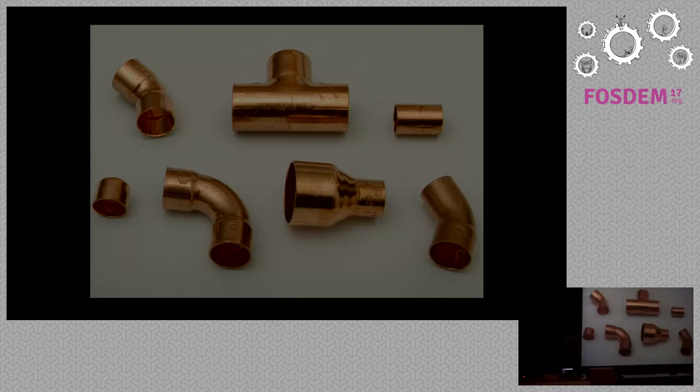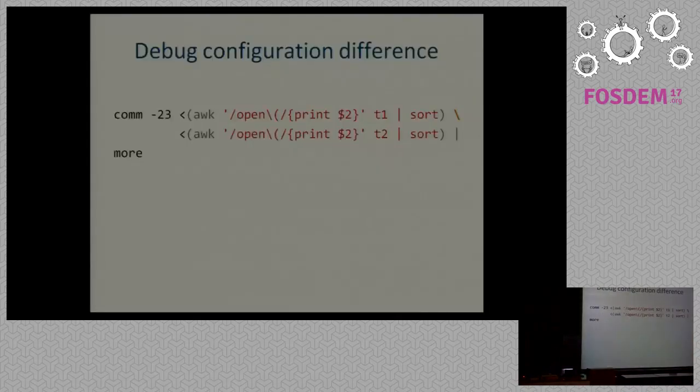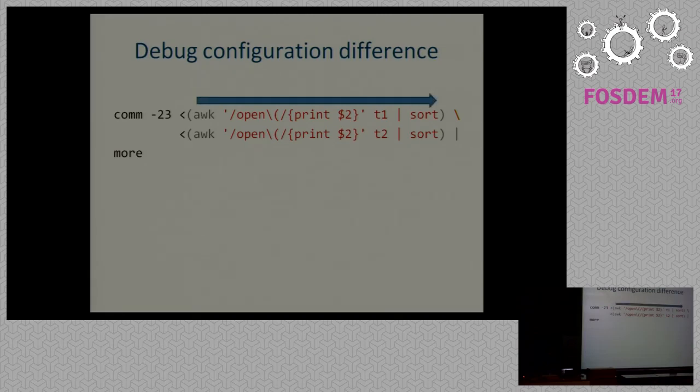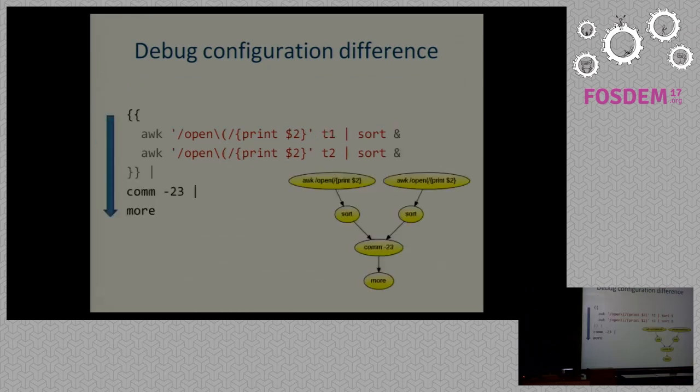Let me give you some further examples. First of all, a motivating example from a debugging perspective. Say you want to find the differences between two strace outputs. And what you would do is run awk and sort the result. The problem with this is that the flow goes in this direction, then it goes back to comm, and then forward to more. It goes in a crazy way, backward and forward. With DAGSH, what you do is you have a multipipe block with the two awks. You pipe that to comm, and you pipe that to more. So the direction is exactly as we are used to read programs.